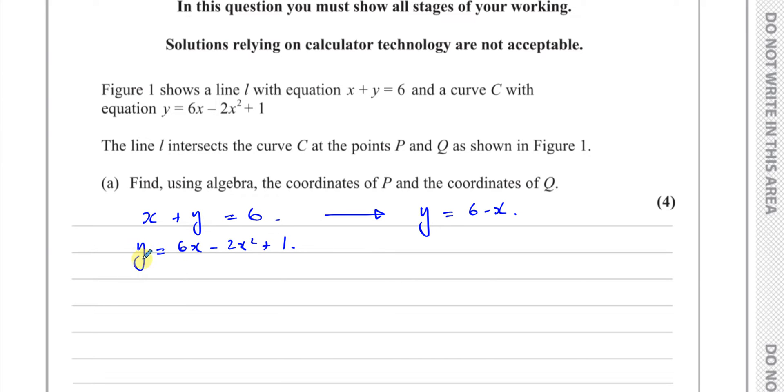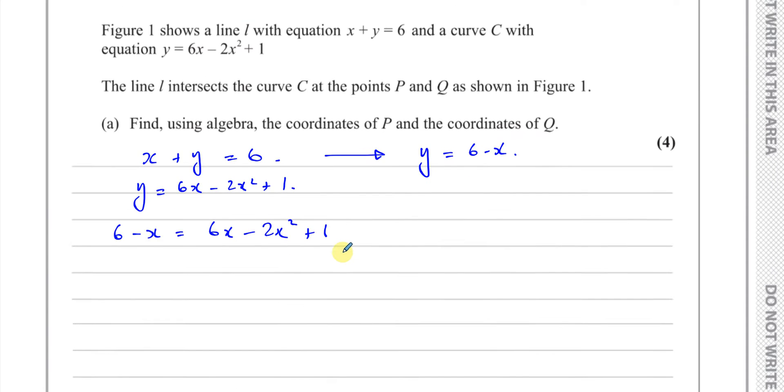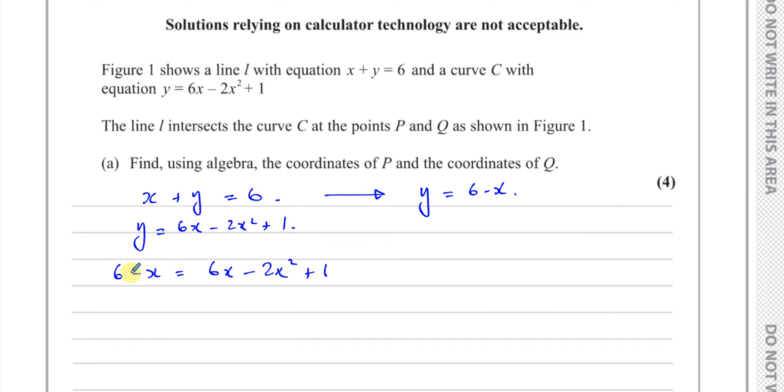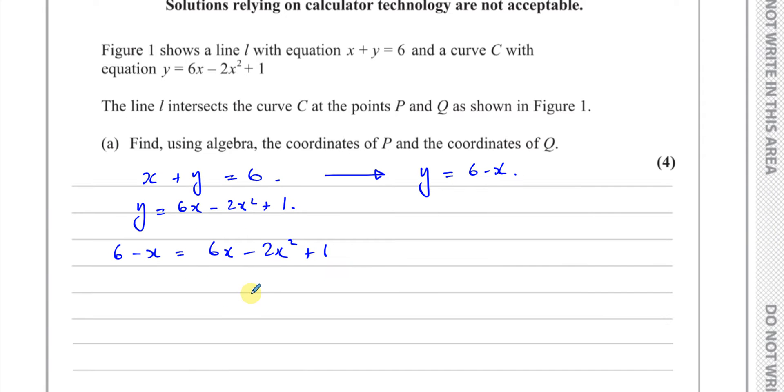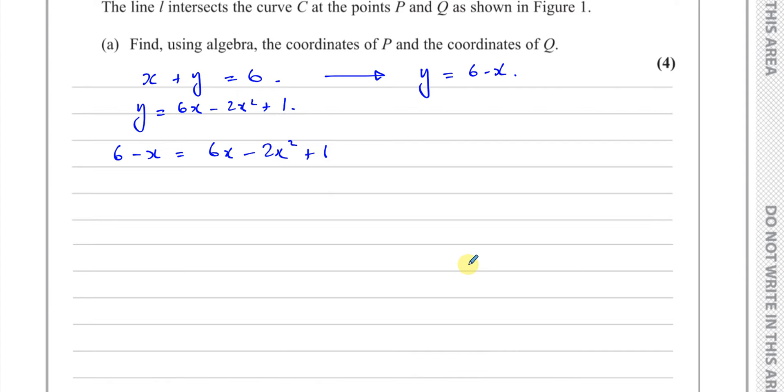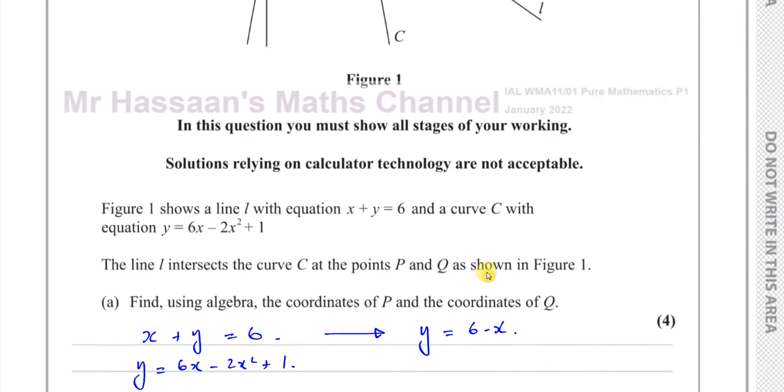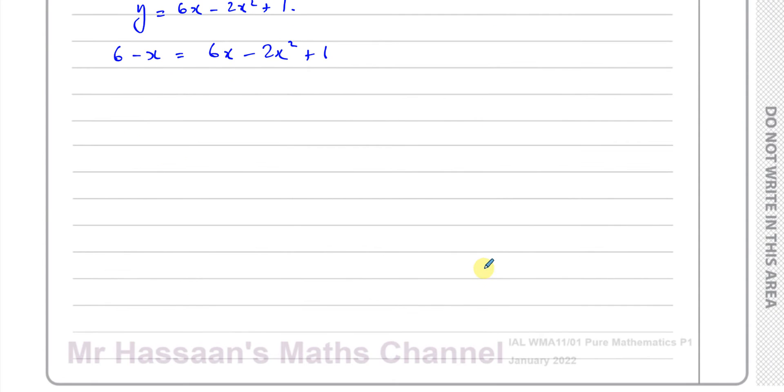Then I substitute y = 6 - x into the second equation, replacing y with 6 - x. When I substitute one equation into the other, I have something I can now solve, and this will tell me the x-coordinates of the points of intersection.